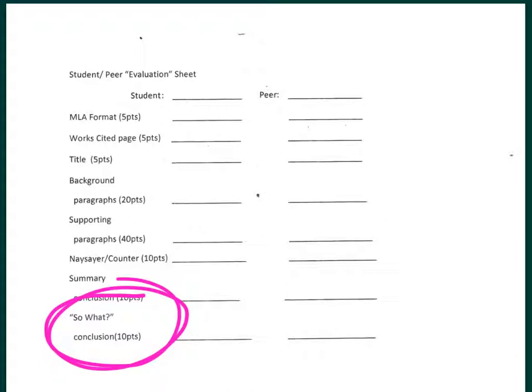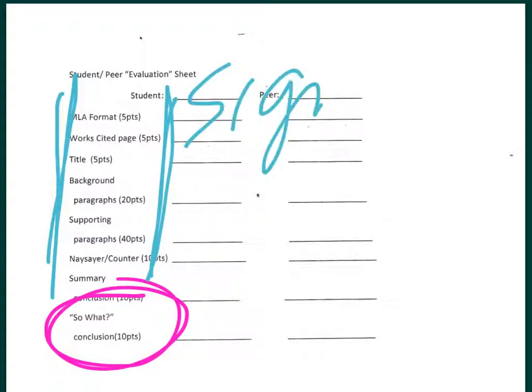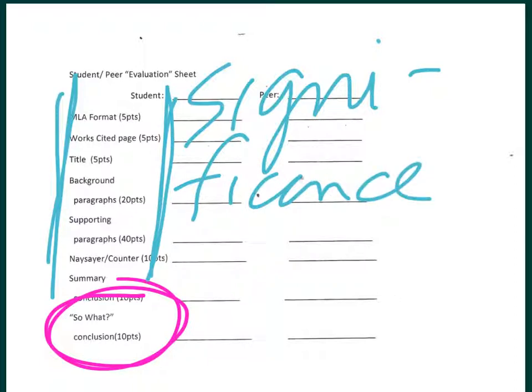And this last section is probably one you're not familiar with. After you've done all of this, and you think you're done, you're not, because you really need a little bit more. You need to talk about why your argument is significant.